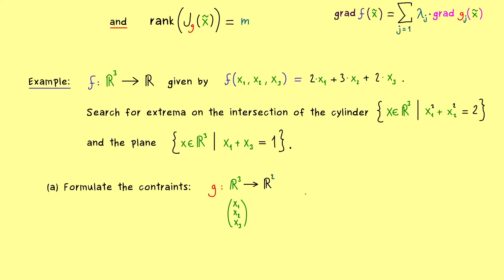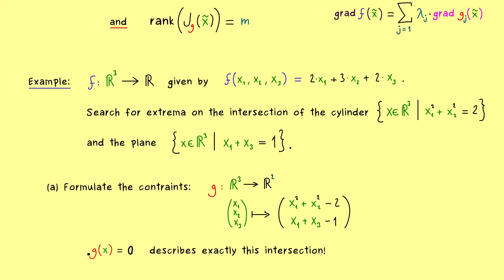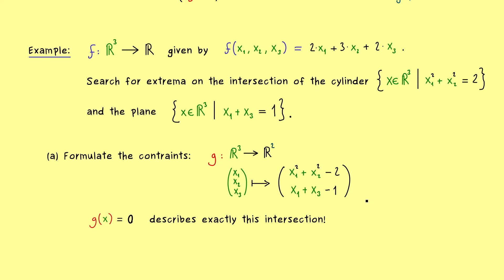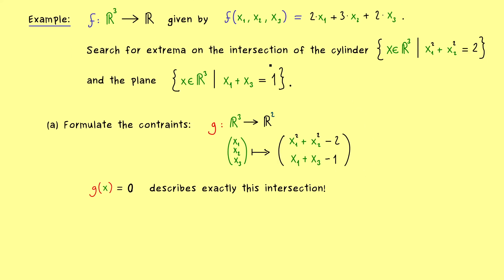Let's start solving the problem by putting this intersection into a constraint function g. Here g maps R³ into R², since we have exactly two constraint functions. We reformulate to get g equal to 0: for the cylinder, the first component is x1 squared plus x2 squared minus 2, and for the plane we subtract 1 to get x1 plus x3 minus 1. So g equal to 0 describes exactly the intersection of the cylinder with the plane.